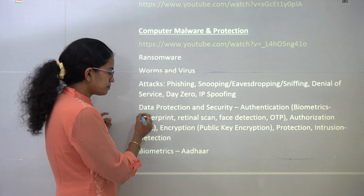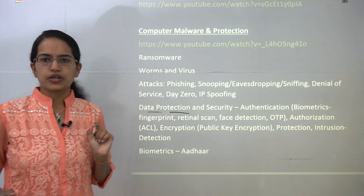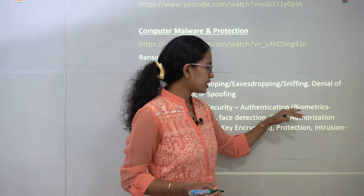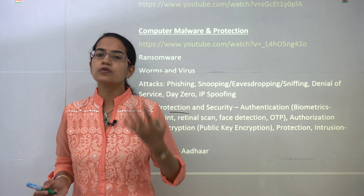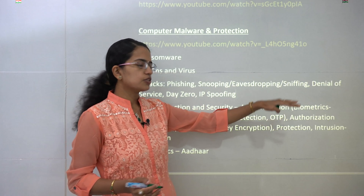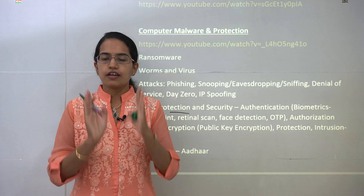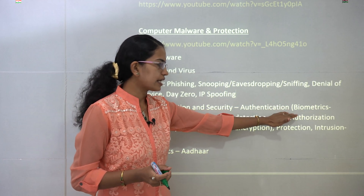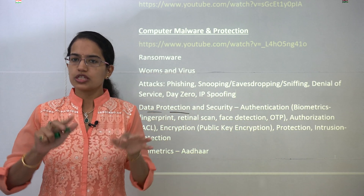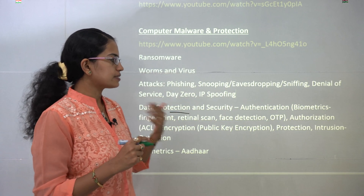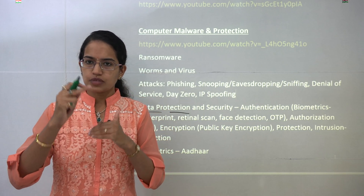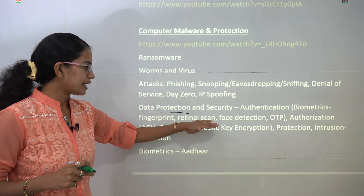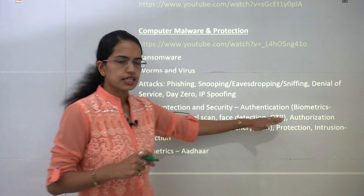The next important terms come under data protection and security. There are five terms: authentication and authorization, which prove legitimacy. Authentication verifies if the person logging in is exactly who they should be — biometrics, OTP, username, and password all confirm the actual person's identity. It can be done by retinal scan, fingerprinting, face detection, or one-time password.